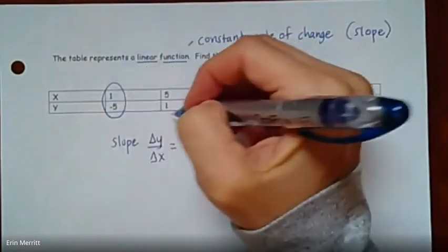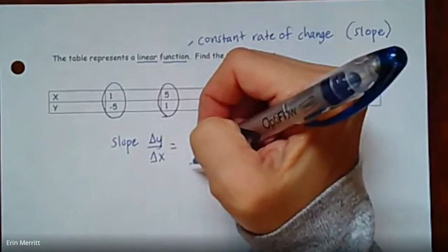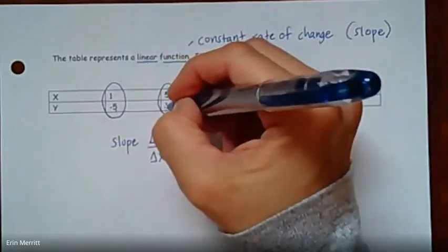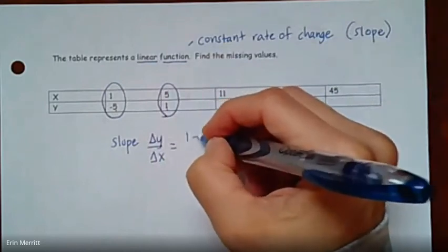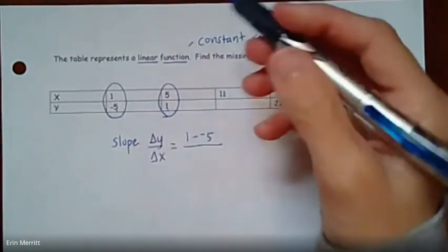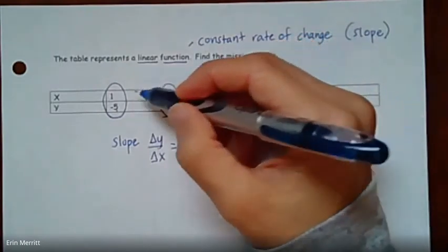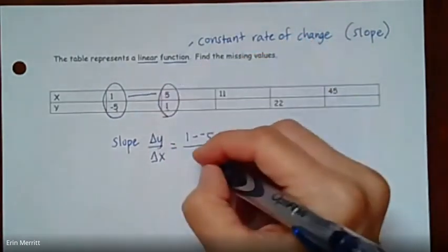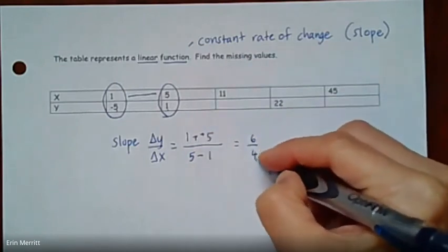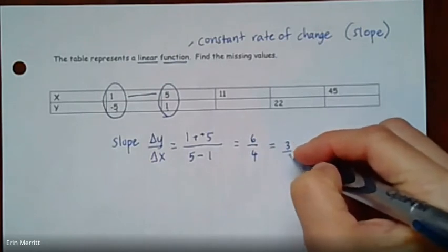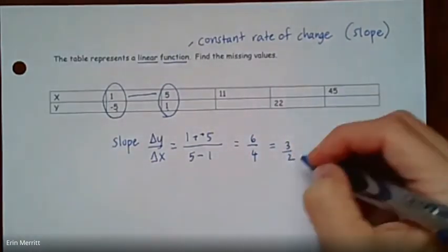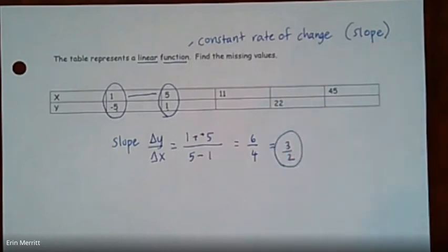So I'm going to do that. If I calculate the slope, remember, change in y over change in x. So the only two points that you know all the values of are right here. So here's an (x, y) point. Here's an (x, y) point. So if I do the change in the y values, so -5, -1. So I'm going to go 1 minus -5. So you can think of it as y2 minus y1. And then change in x's. So 5 minus 1. This would give me 6 and then over 4. And so that is the slope of this line. All right. There's my slope.